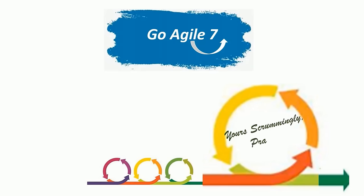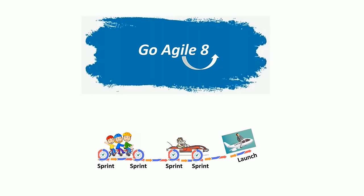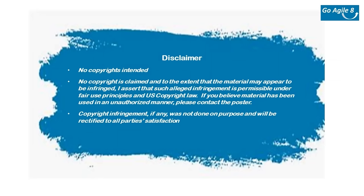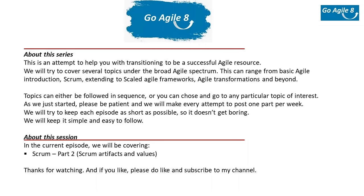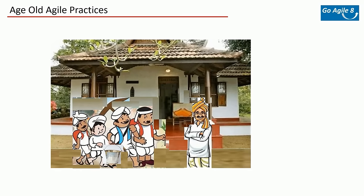Welcome back to Go Agile part 8. Last time we covered the first part of Scrum. Before continuing, let me share an interesting analogy from my friend Sreenivas in Australia — about how agile practice has been around for hundreds of years. Farmers in India were practicing agile for hundreds of years. Every morning in a village, all farmers working for a landlord assemble and discuss what they did yesterday, their observations, what needs to be done today, and what tools or materials they need — just like your daily stand-up in Scrum.